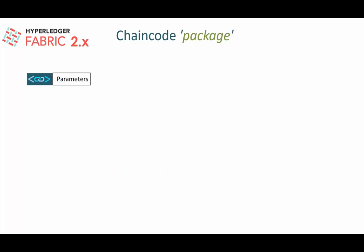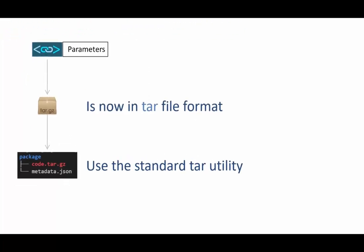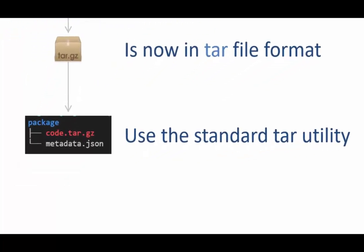The chaincode package format in Fabric 2.x is now the standard tar file format, so you can use the tar utility to inspect its contents. The package contains two parts: 'code.tar.gz,' which holds the chaincode code, and 'metadata.json,' which contains metadata about the chaincode including the configuration provided for the parameters.